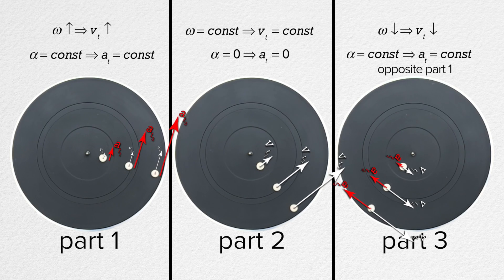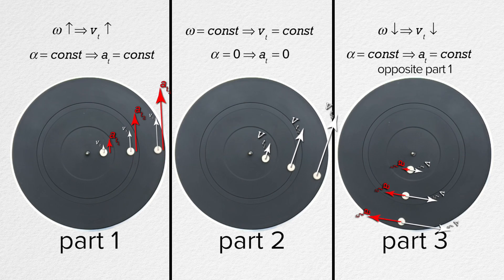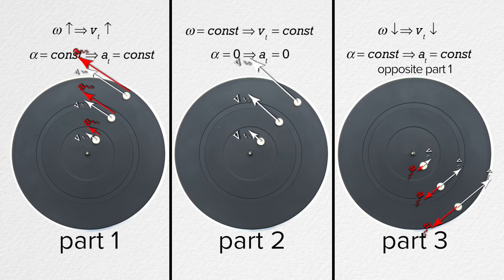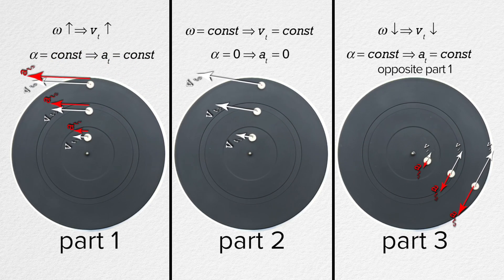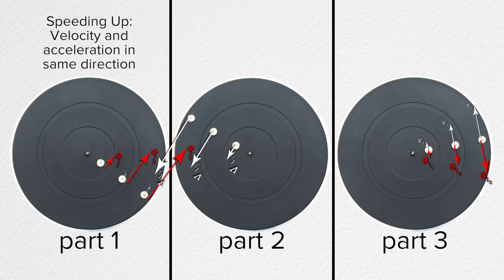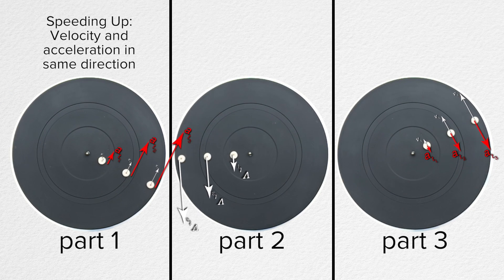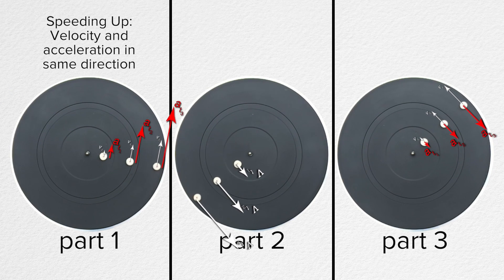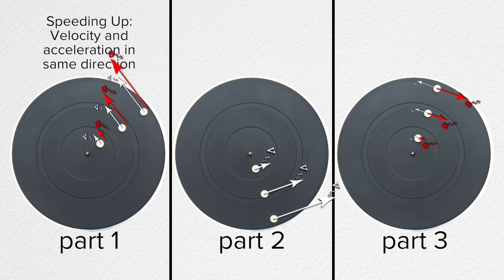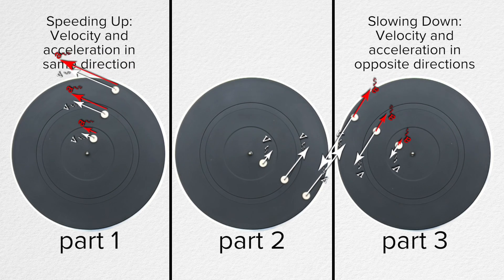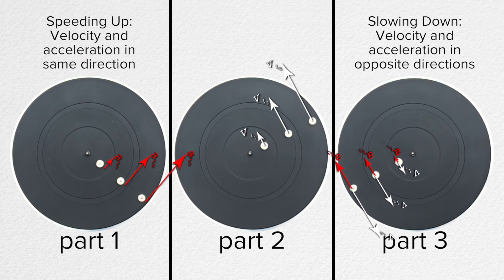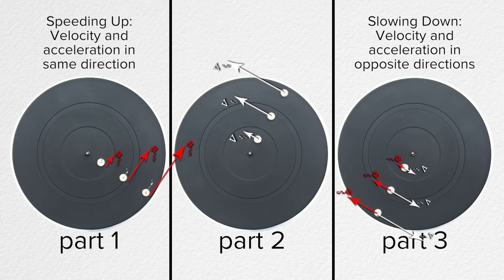Notice, just like we talked about before with a bicycle, when an object is speeding up, the velocity and acceleration are in the same direction, and when an object is slowing down, the velocity and acceleration are in opposite directions.